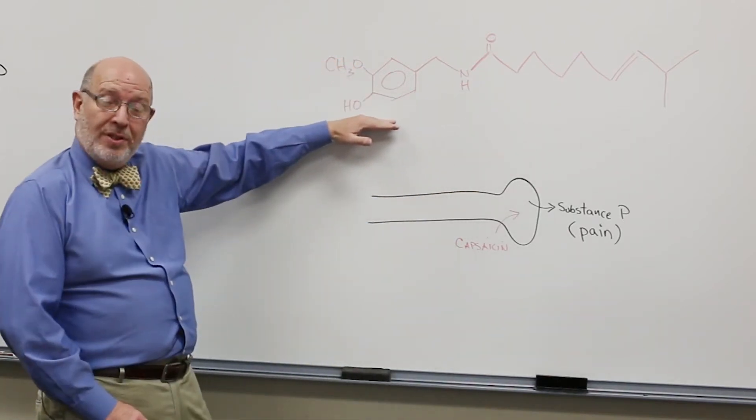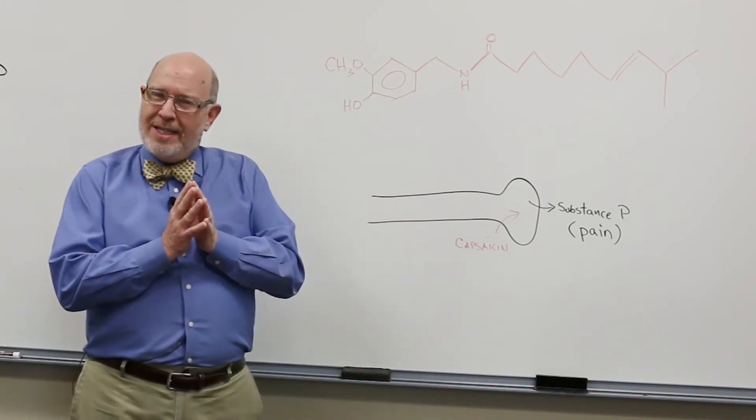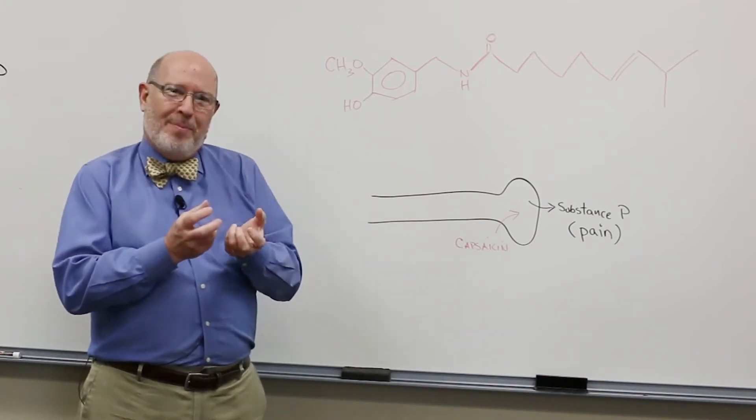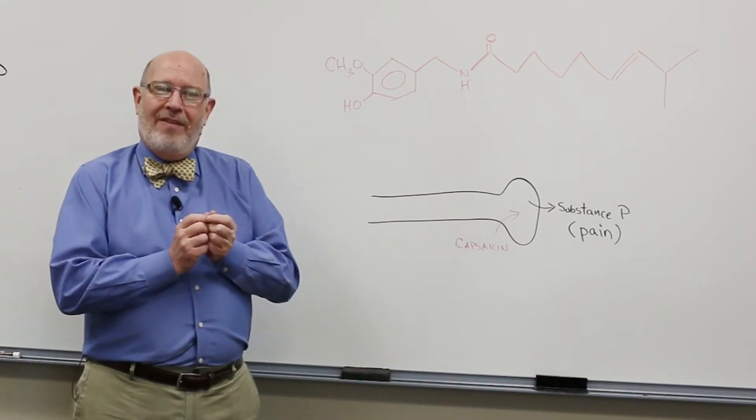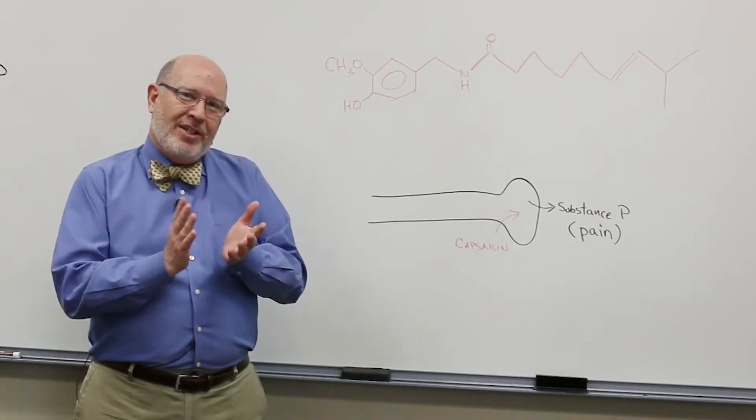So when he was quantifying hot peppers, he did that by mushing up the peppers in alcohol and then diluting it to the point where folks could just barely taste it. Capsaicin is a drug that works through depleting nerve endings of a neurotransmitter called substance P.